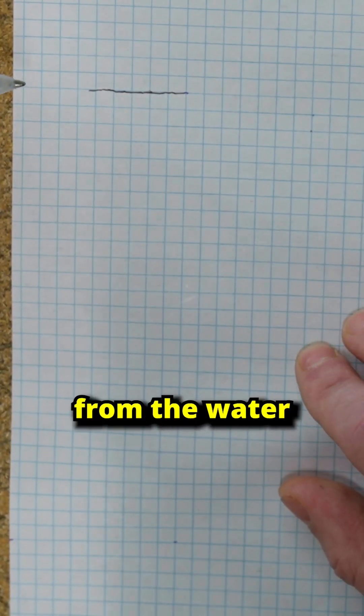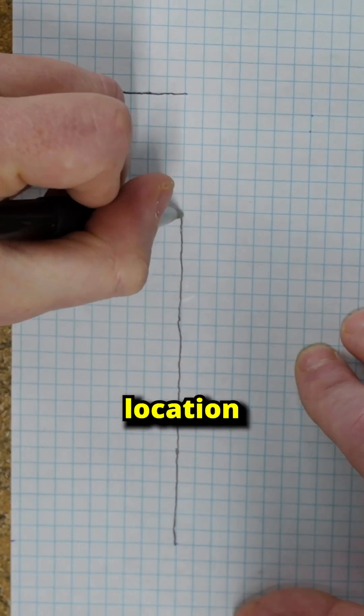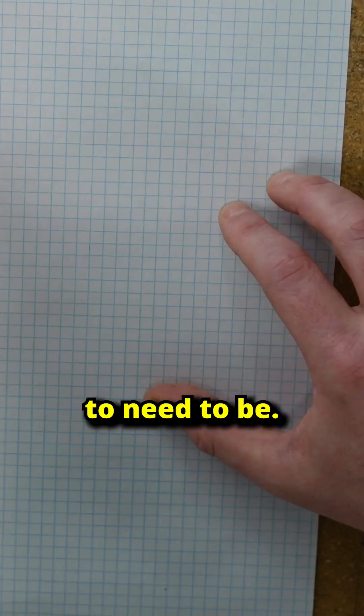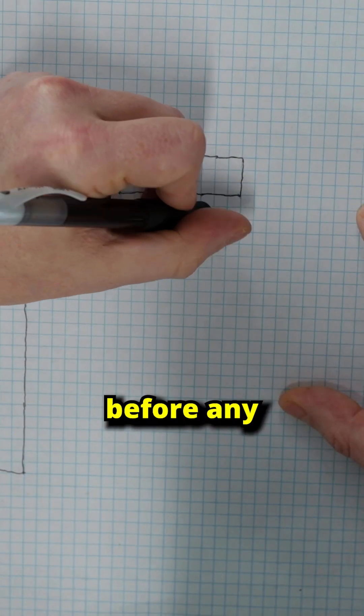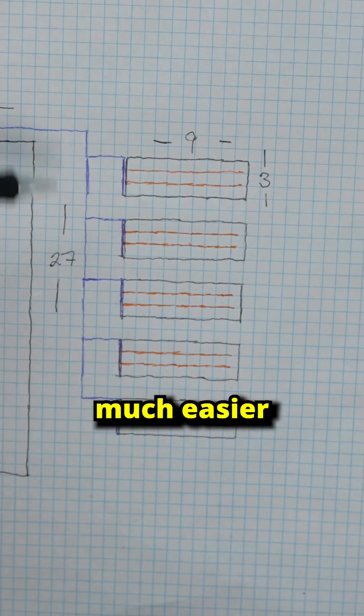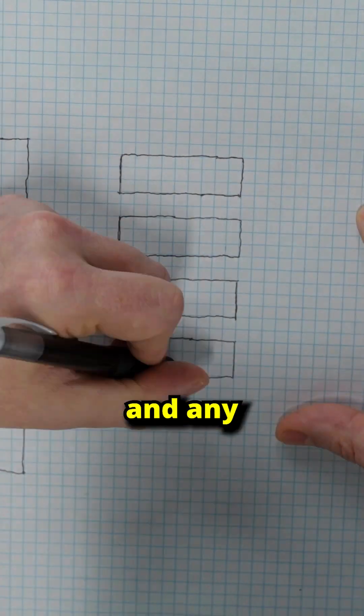Create a quick sketch of the area from the water source to the furthest location or plant that the system is going to need to be. This allows you to visualize the system before any parts are ordered and makes it much easier to plan out your mainline tubing run and any fittings.